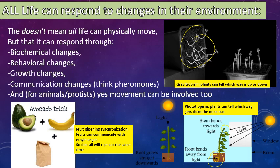Another way you see response to changes in the environment is what I call the avocado trick. Many fruit species ripen at the exact same time. When a fruit ripens, it releases a gas called ethylene gas, which signals the other fruit on the tree to ripen as well. We can take advantage of this: if you buy an avocado and it's really hard and not ripe, stick it in a paper bag with a ripening banana. The banana will release ethylene gas and trigger the avocado to start ripening too. So plants can respond through growth changes, communication changes, and even behavioral changes — and yes, you can have behavior without movement.